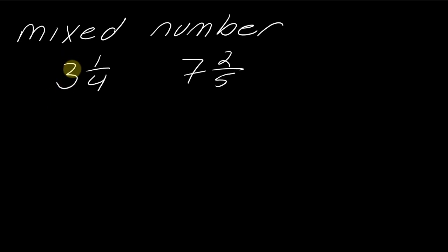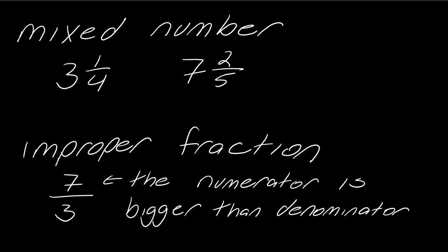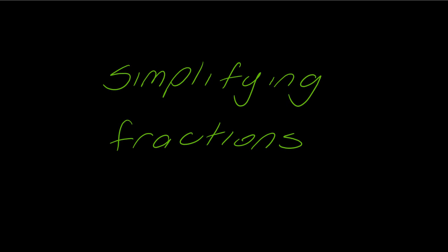A mixed number has a whole number with a fraction attached to it. An improper fraction looks like seven over three — for an improper fraction, the numerator on top must be bigger than the denominator on the bottom. It's very common to have to flip between these two forms, so let's make sure we're comfortable moving between them before we get into different types of fraction operations.